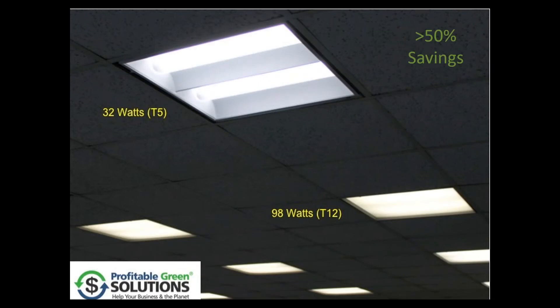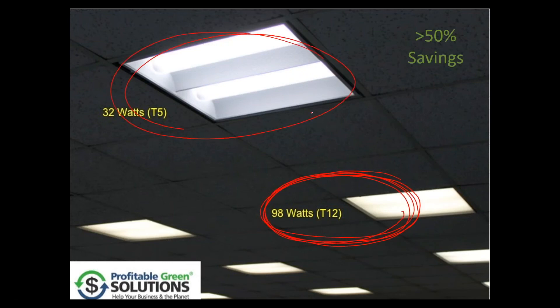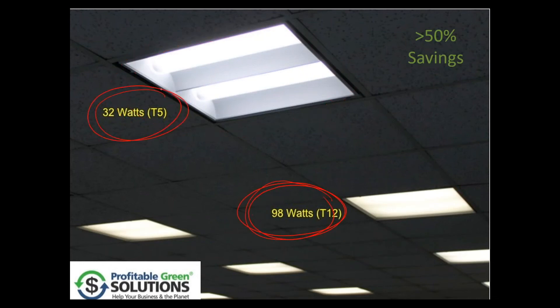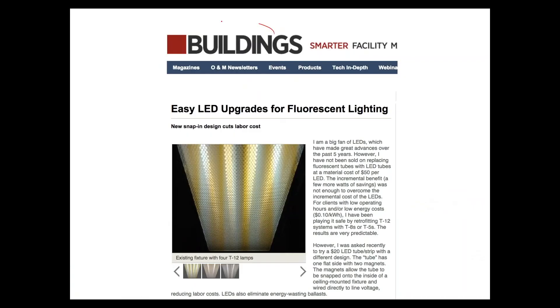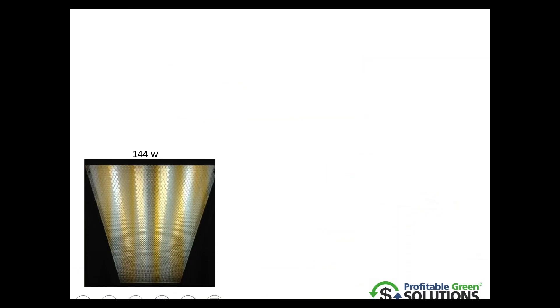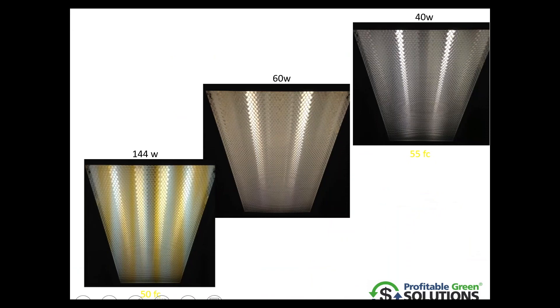Here's an example of a retrofit where the existing fixture was a T12 — really old — but it could have been a T8. It was upgraded to a T5 fixture; today it could be done to a shielded LED. You can see the difference: 98 watts down to 32 watts, pretty substantial. Lighting is changing all the time. Forty years ago we had lighting that would take 144 watts to accomplish something, and you can see the progression of newer technologies getting more light, cleaner light, brighter light, better CRI — with less watts.